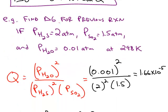So for the reaction that I just calculated, the standard delta G, we can calculate delta G under non-standard conditions given these pressures and at 298 Kelvin.